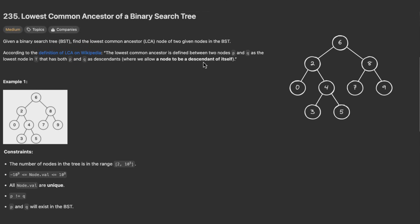Hello guys and welcome back. Let's solve a new LeetCode problem. Today's problem is the Lowest Common Ancestor of a Binary Search Tree. We are given a binary search tree and we want to find the lowest common ancestor node of two given nodes in the BST. The lowest common ancestor is defined between two nodes p and q as the lowest node in T that has both p and q as descendants. A node can be a descendant of itself.